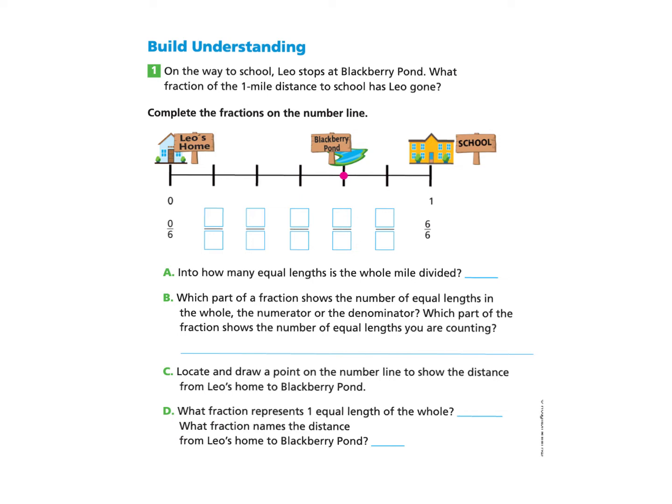On the way to school, Leo stops at Blackberry Pond. What fraction of the one-mile distance to school has Leo gone? Complete the fractions on the number line. We notice there is a number line and some pictures showing where Leo starts at his house, which is 0 or 0 over 6, and the ending is the school, which would be 1 mile, or the fraction 6 over 6.